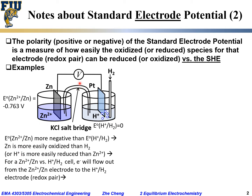What this means is: if we have such a zinc / zinc-ion versus hydrogen / proton electrochemical cell, electrons will naturally flow out from the more negative side — which is the zinc side — into the hydrogen / proton side. The overall spontaneous reaction would be zinc giving out electrons to become zinc 2+ ion, while the proton obtains electrons to become hydrogen gas.